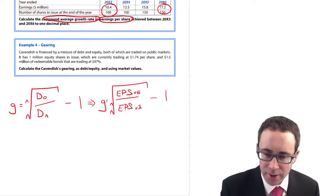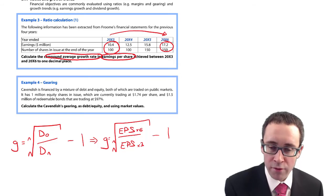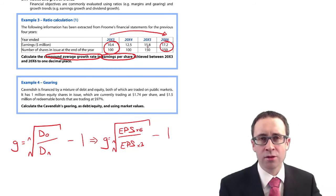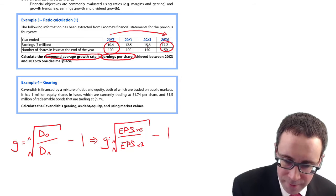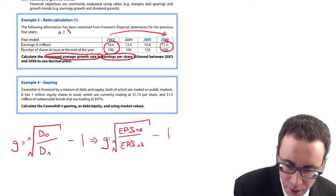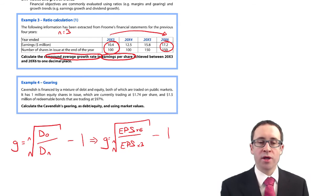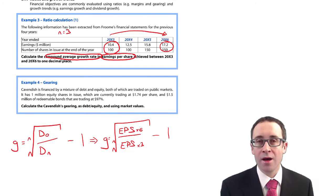Have a go. You've got three years of growth from X3 to X6, so N equals three. You can work out your earnings per share by doing your earnings divided by the number of shares for both X3 and X6. Have a go and see how you get on.